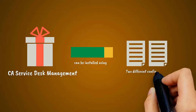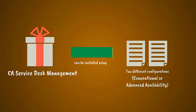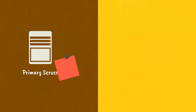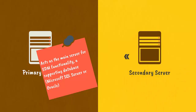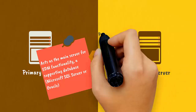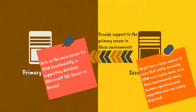CA Service Desk Management can be installed using two different configurations: Conventional or Advanced Availability. The conventional configuration includes a primary server which acts as the main server for SDM functionality, a supporting database, and optional secondary servers which provide support to the primary server in environments with a large number of users or where operations and supported users are widely dispersed.